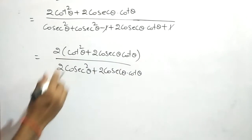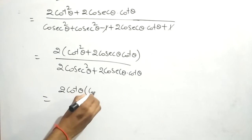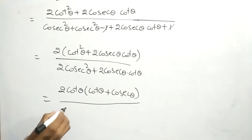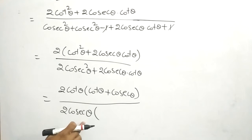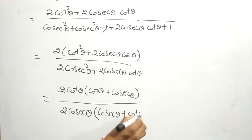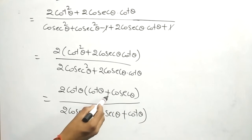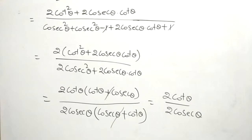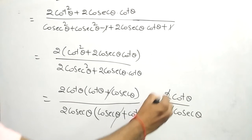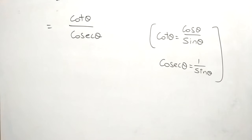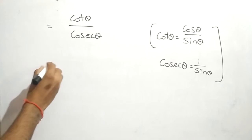In the numerator we can take 2cotθ common, giving 2cotθ(cotθ + cosecθ). In the denominator we can take 2cosecθ common, giving 2cosecθ(cosecθ + cotθ). Since (cosecθ + cotθ) appears in both numerator and denominator, they cancel. After cancellation we get 2cotθ / 2cosecθ, and the 2s cancel, leaving cotθ / cosecθ.